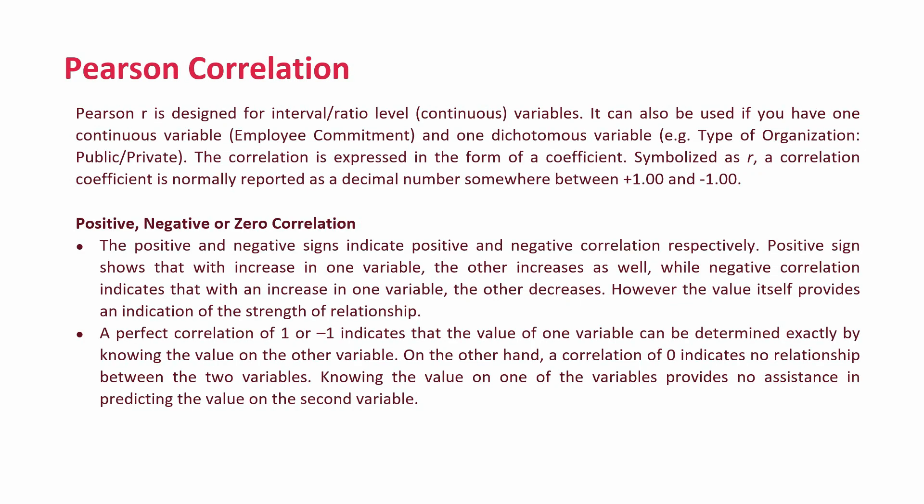Pearson correlation, designated by R, is designed for interval/ratio level continuous variables. It can also be used if you have one continuous variable such as employee commitment and one dichotomous variable such as type of organization. The correlation is expressed in terms of a coefficient symbolized as R. A correlation coefficient is normally reported as a decimal number somewhere between plus 1 and minus 1.